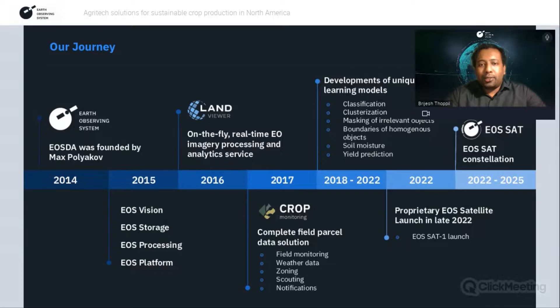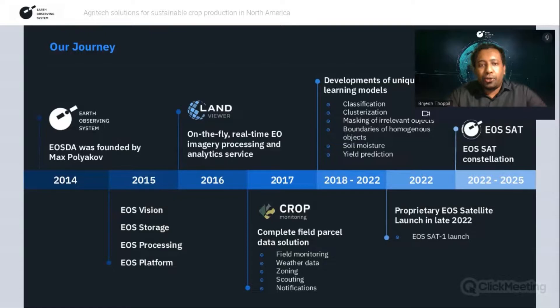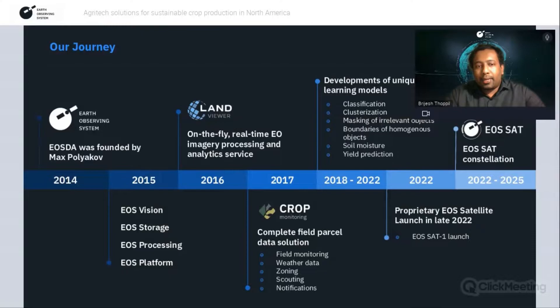Our company was founded in 2014 by Max Polyakov, an international entrepreneur and investor known for developing successful businesses around space technology and IT. Initially, we started with development of platforms — one example being EOS Storage, which provided cloud infrastructure for storing and obtaining instant access to thousands of terabytes of Earth observation and GIS data. Then in 2016, we launched LandViewer, a platform providing on-the-fly satellite imagery processing, very useful for GIS researchers. Using that experience, we confidently launched the Crop Monitoring platform, a comprehensive farm management solution available as a web-based platform.